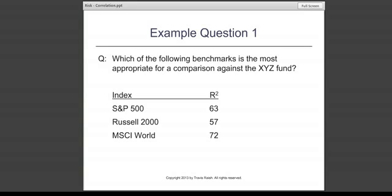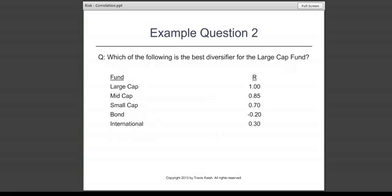So here's example question number one. Which of the following benchmarks is the most appropriate for a comparison against the XYZ fund? We've been given three different benchmarks: the S&P 500, the Russell 2000, and the MSCI World Index, and we're being given r squared. In order to answer this question, you have to understand what r squared is and what it's telling you. When we get to that, we'll come back and answer this question.